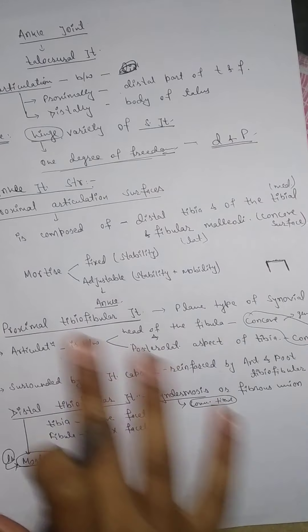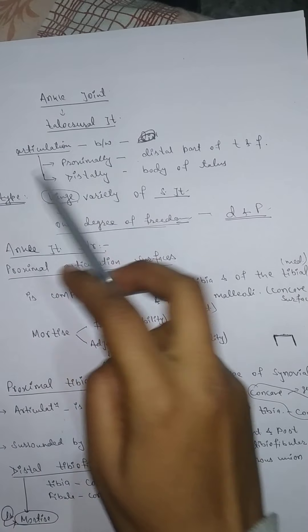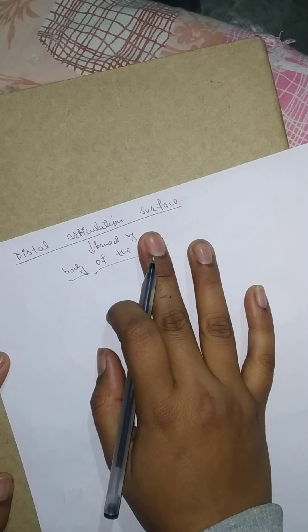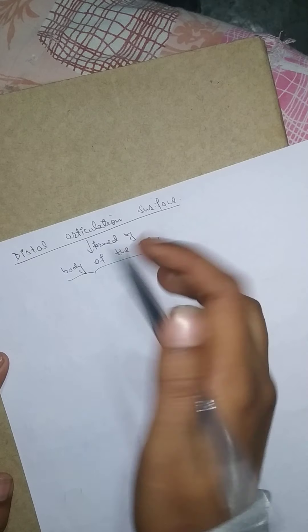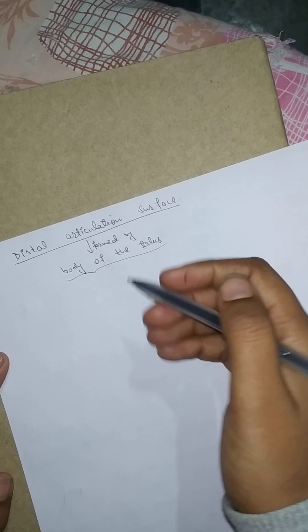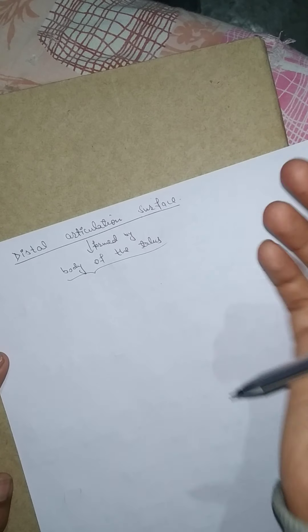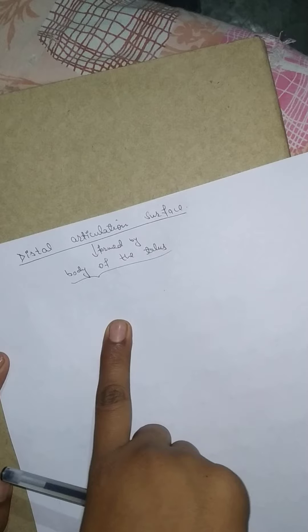This completes discussion of the proximal articulation surface of the talocrural joint. Now we discuss the distal articulation surface, which is formed by the body of the talus. The body of the talus has three articulation surfaces to articulate with the proximal articulation surfaces of the talocrural joint.